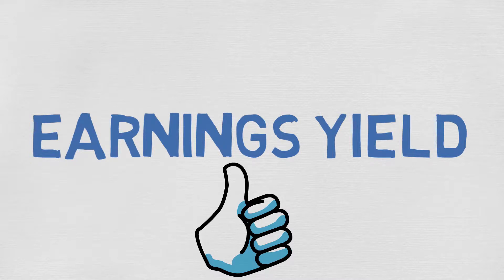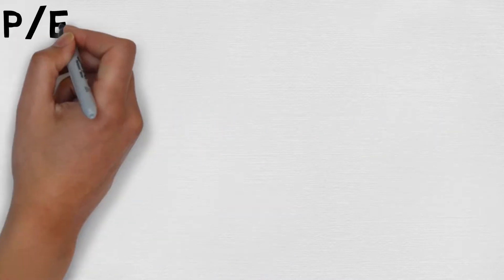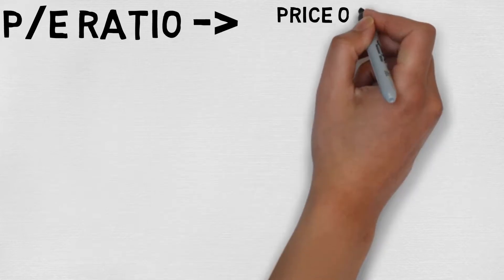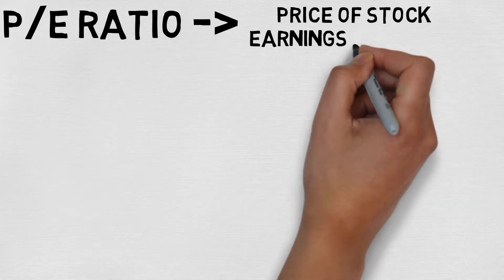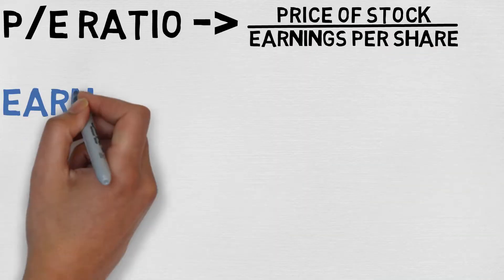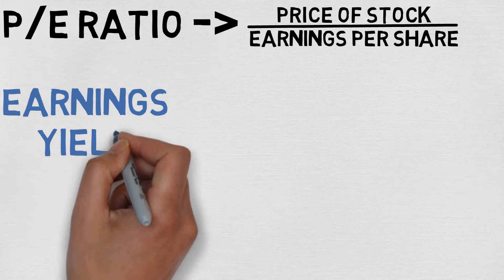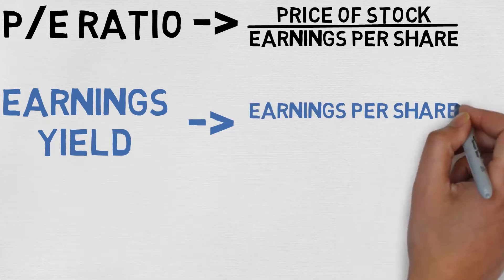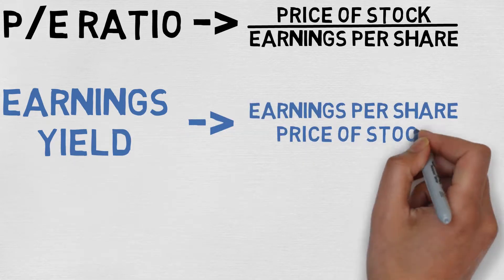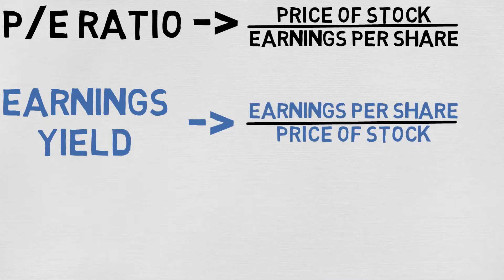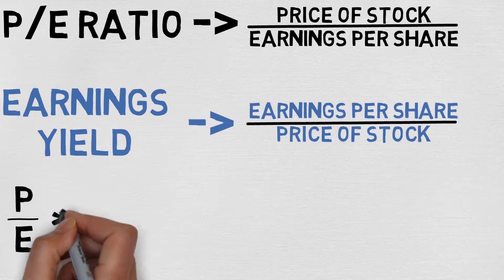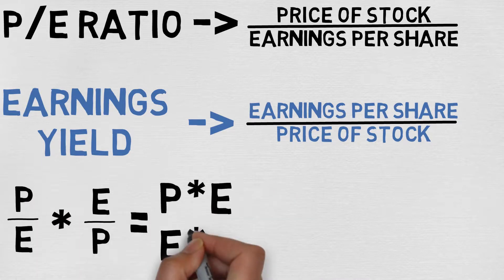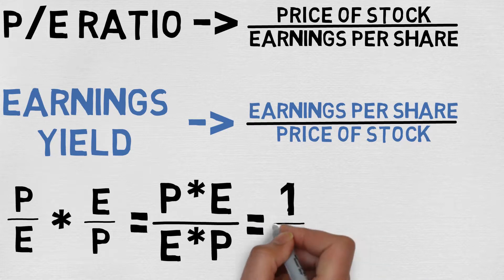Let's get started. You have probably heard about P/E ratio, which stands for price to earnings ratio. Earnings yield is the inverse of the P/E ratio, meaning that it is calculated by dividing the earnings per share by the stock price. If you multiply P/E ratio with earnings yield, the answer will be 1.